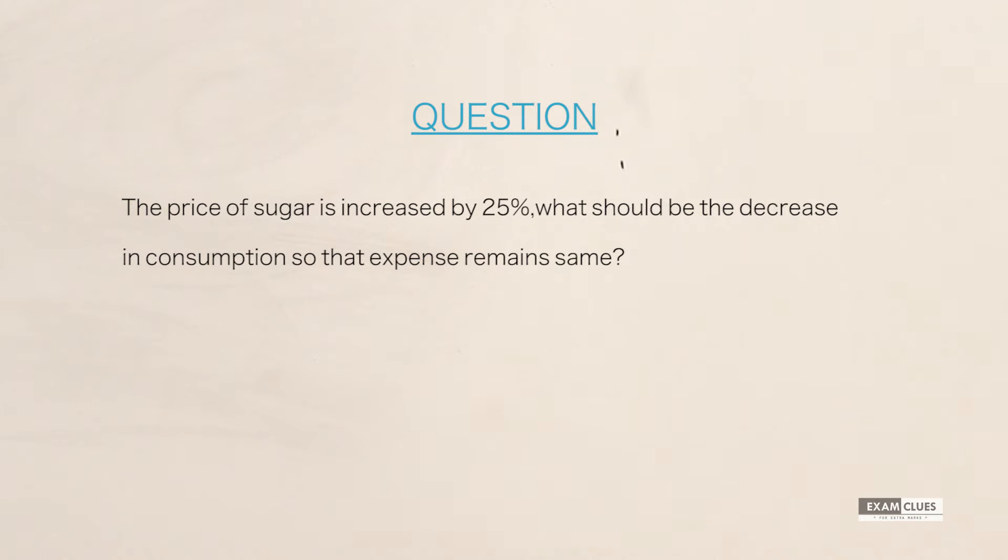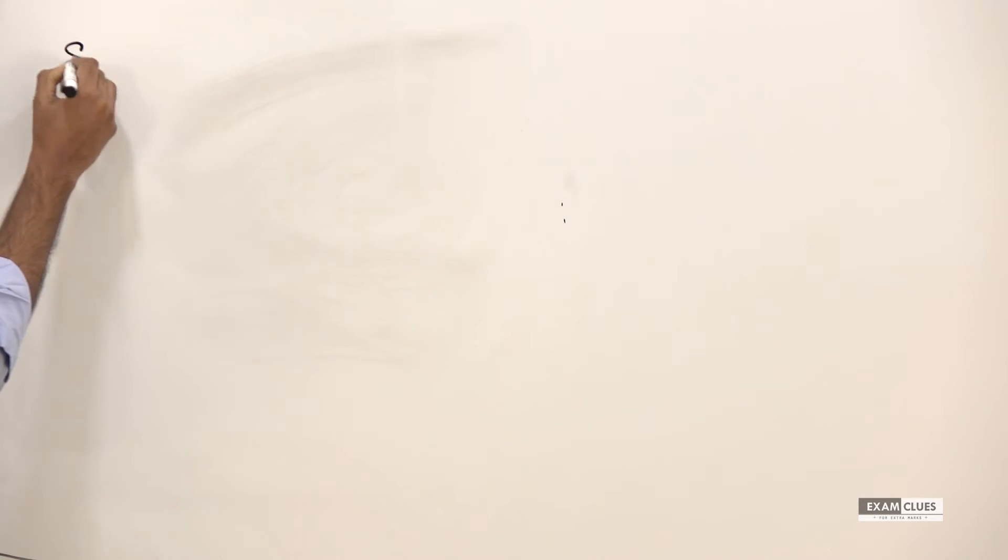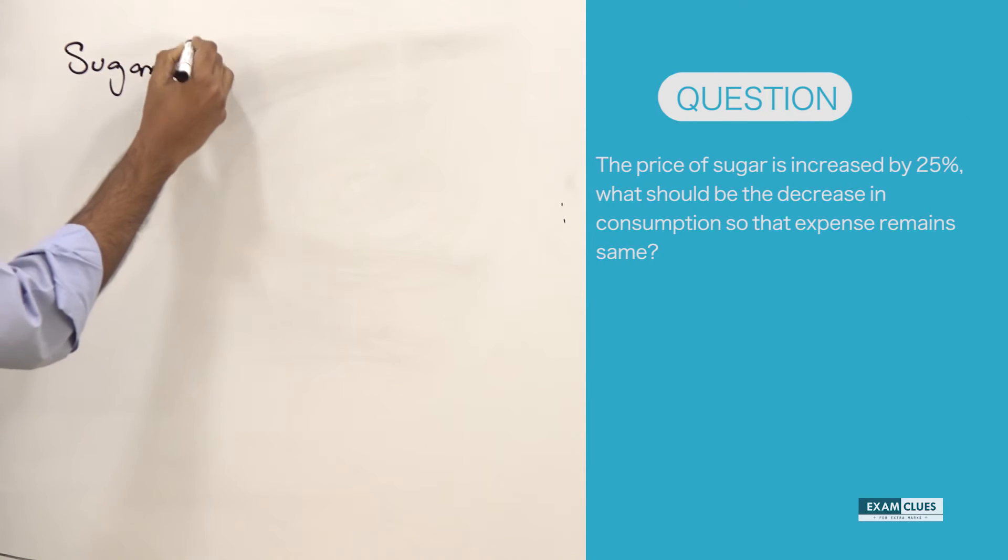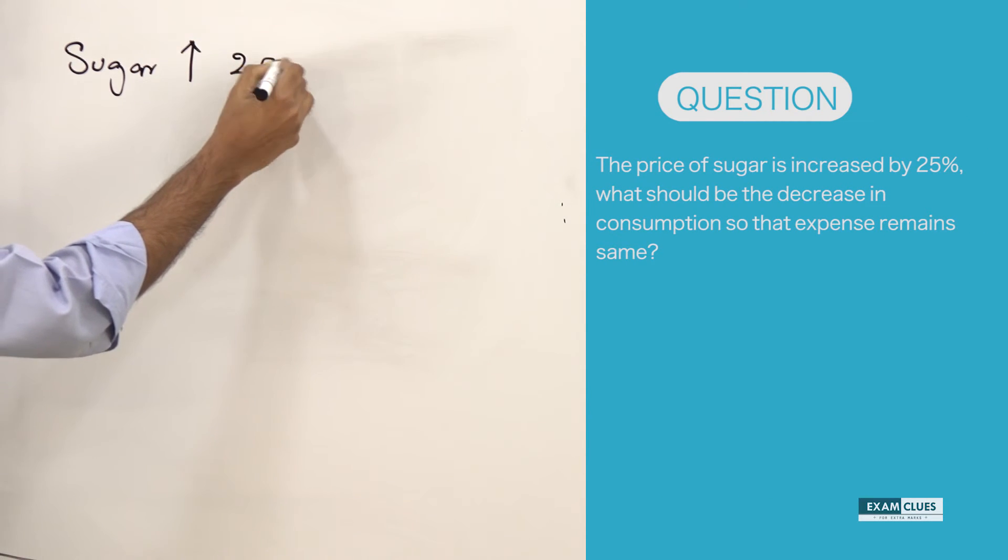Let's look at the question once again. The price of sugar is increased by 25%. What should be the decrease in consumption so that expense remains the same? So what does it mean? Let's analyze. Sugar cost is increased by 25%. Let's say I am buying the same amount, the same number of kilos I used to buy earlier. What would happen?